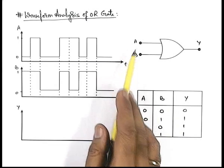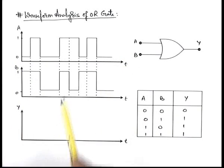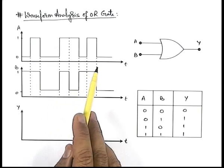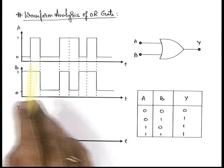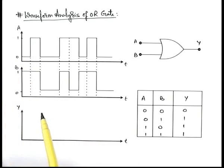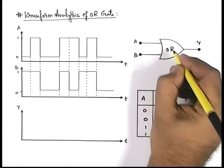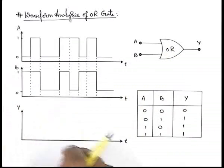Say at terminals A and B these two signals are applied which are varying with time and both are digital signals. That is at any instant either the state of one signal is zero or it is one. Let's see what signal we are getting at the output of this OR gate at which inputs these two signals are applied.